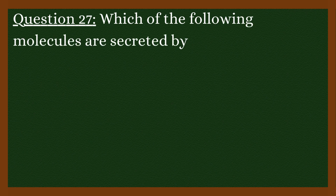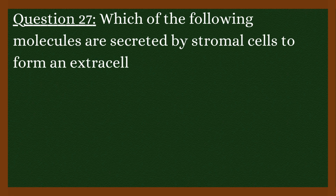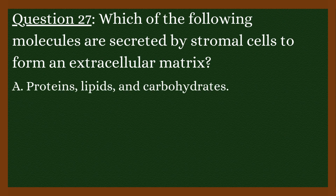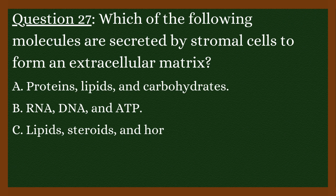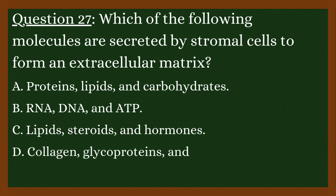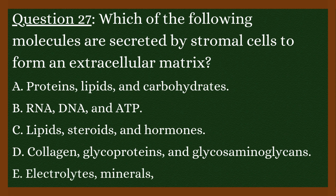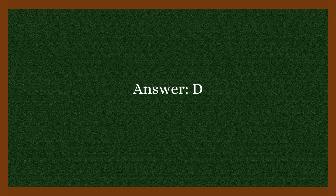Question 27: Which of the following molecules are secreted by stromal cells to form an extracellular matrix? A. Proteins, lipids, and carbohydrates. B. RNA, DNA, and ADP. C. Lipids, steroids, and hormones. D. Collagen, glycoproteins, and glycosaminoglycans. E. Electrolytes, minerals, and vitamins. Answer is D. Collagen, glycoproteins, and glycosaminoglycans.